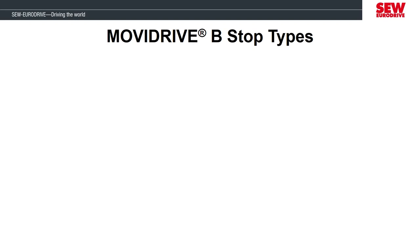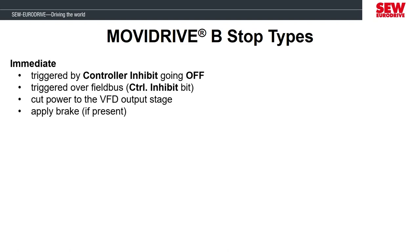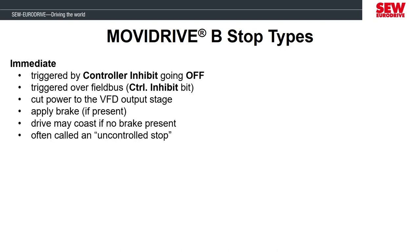Now let's talk about the different stop types the MobiDrive can have. The first is the immediate stop. We saw this demonstrated in the last lab when we triggered the controller inhibit terminal while the motor was rotating. When that was triggered, the power to the motor was switched off immediately and the brake engaged, which caused the motor to have an abrupt stop where it jerked. If the motor didn't have a brake, then it would have coasted for some time until it came to a stop. This is called an uncontrolled stop because everything stops immediately.